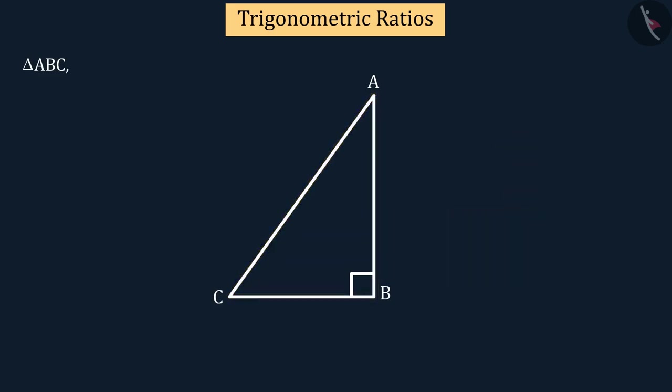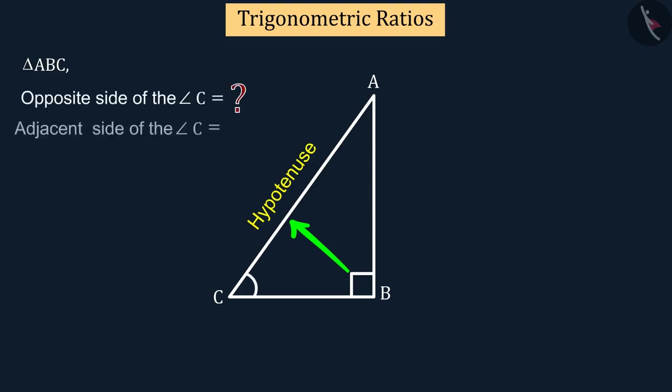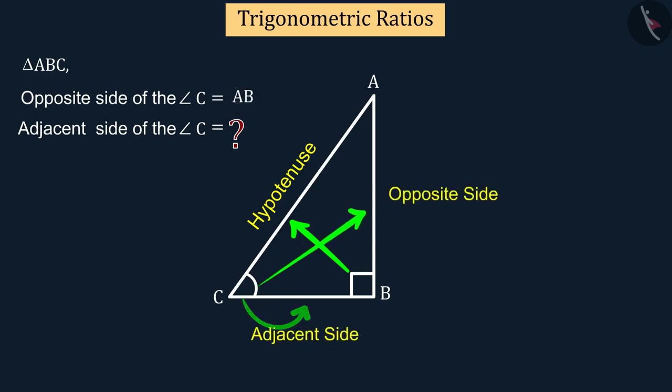Can you tell the opposite side and the adjacent side of angle C? Well done! The opposite side is AB and the adjacent side is BC. Then, with respect to angle C, the hypotenuse is AC, the opposite side is AB, and the adjacent side is CB.